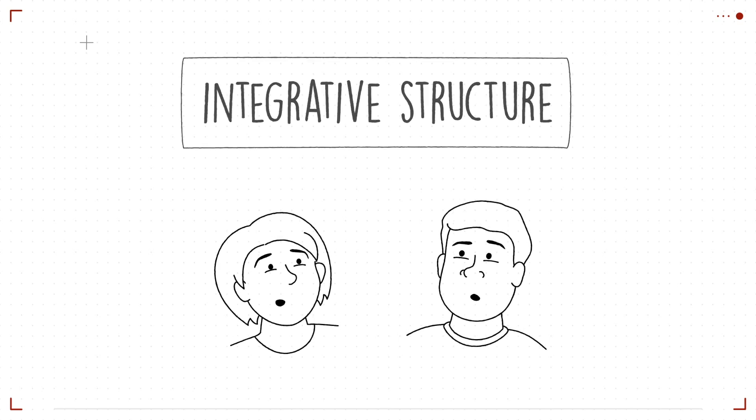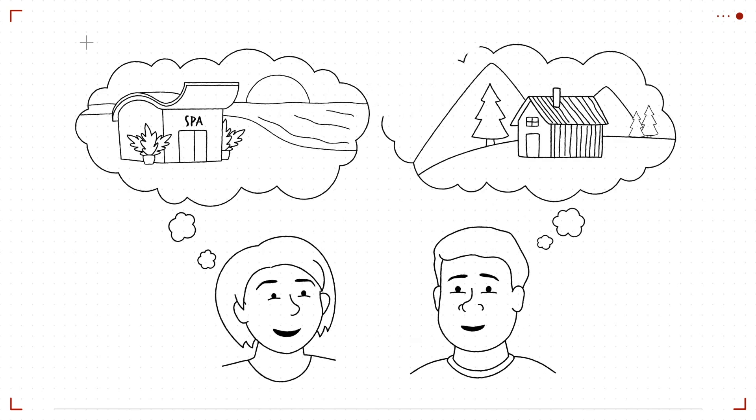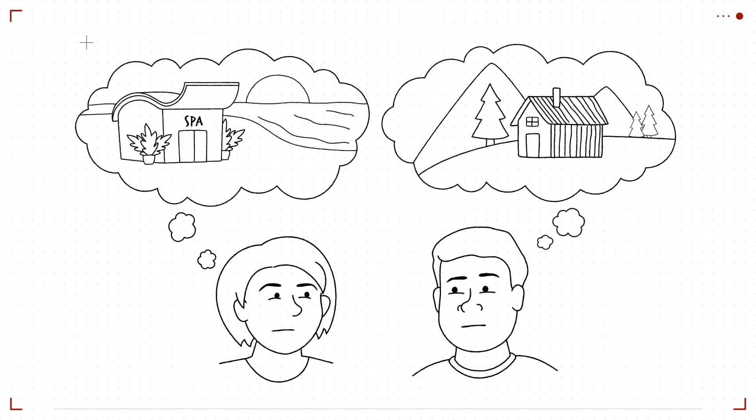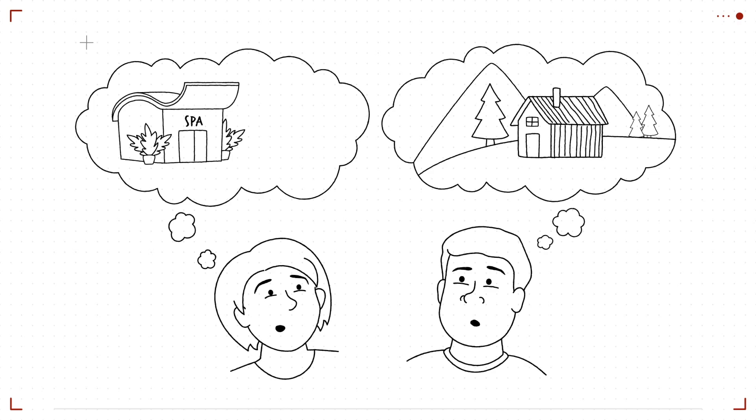For example, imagine that my husband and I are trying to plan a vacation. I want to go to the spa at the beach whereas he wants to go to a cabin in the mountains. At first glance, it seems like we're going to go on different vacations.